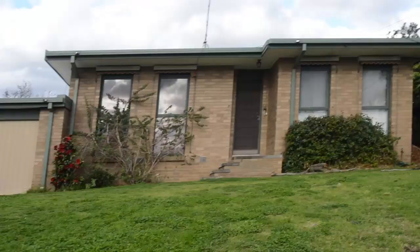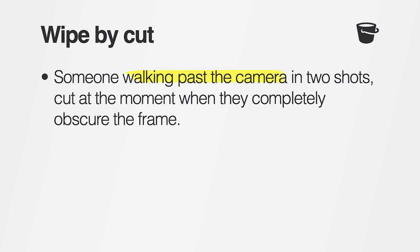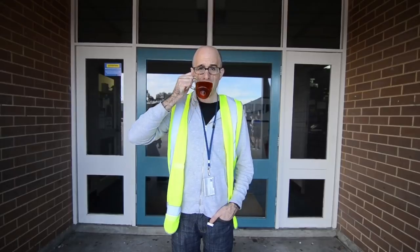If you'd like to try a whip pan, you can whip out of one shot and into another. As long as your camera is moving in the same direction, you'll be able to put a cross-dissolve between those two shots, and it's going to appear like a continuous camera movement. A wipe-by cut is when someone passes in front of the camera, and then you cut to a different shot as someone finishes passing in front of the camera. Putting a slight cross-dissolve between these two shots means that the transition is almost imperceptible.